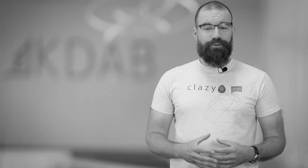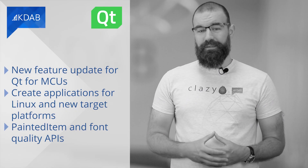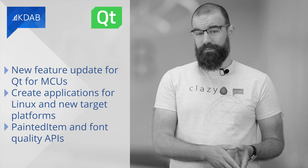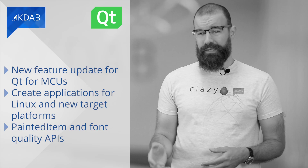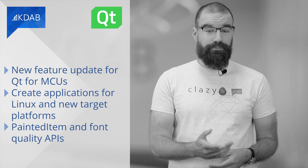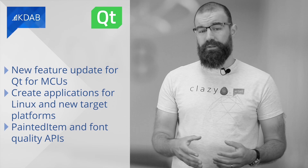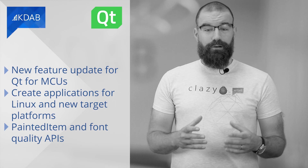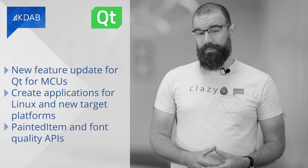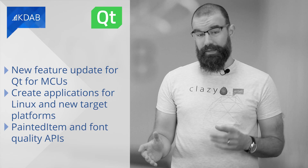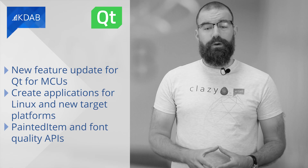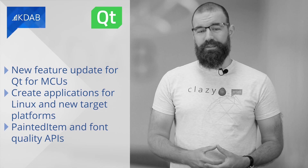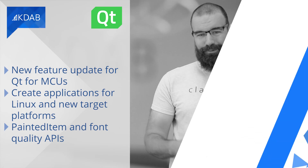A new feature update of Qt for MCUs 1.9 is now available. It allows you to create your application on Linux systems and for new target platforms, get access to the new Pointer Item and font-quality APIs, and discover new demos and examples. Qt Quick Ultralight maintains source compatibility between minor releases; however, some changes may require you to adapt your application code accordingly. The complete list of changes can be found below the video.